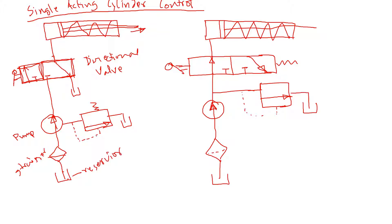And this is a pressure relief valve. Now with this setup, when the pump is acting and this end is blocked, there will be no flow — nothing will happen to the cylinder. This is the left envelope and this is the right envelope.